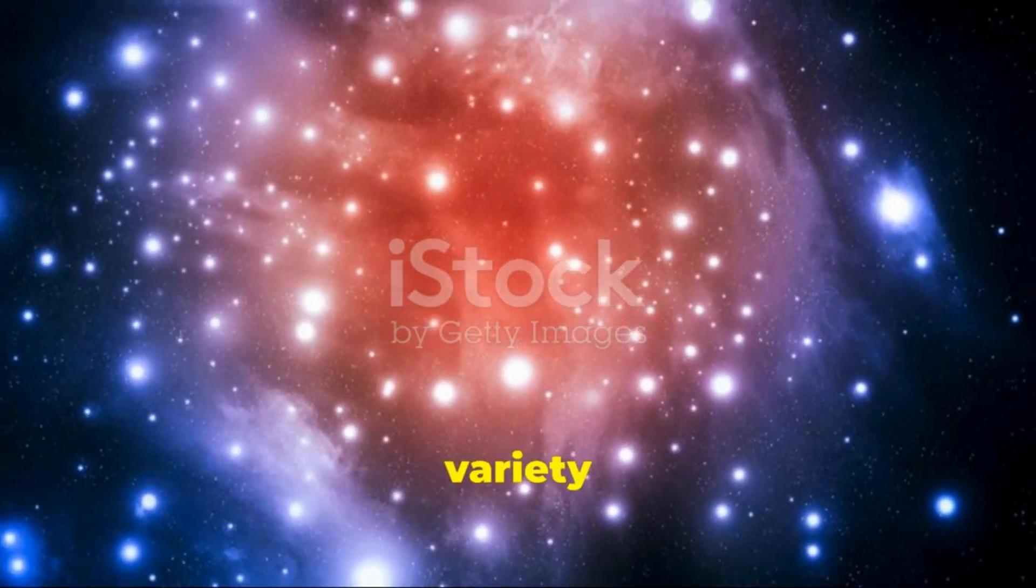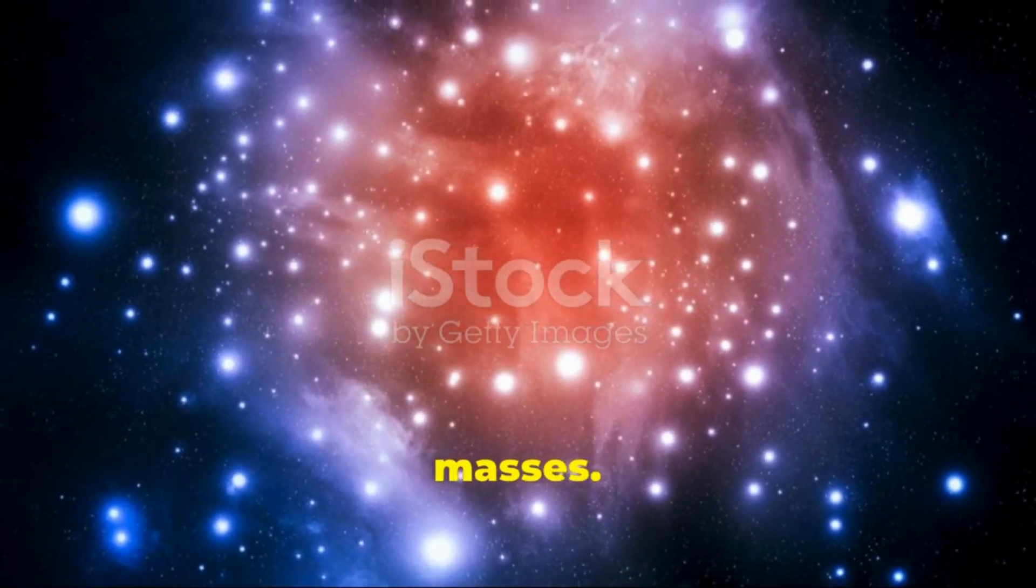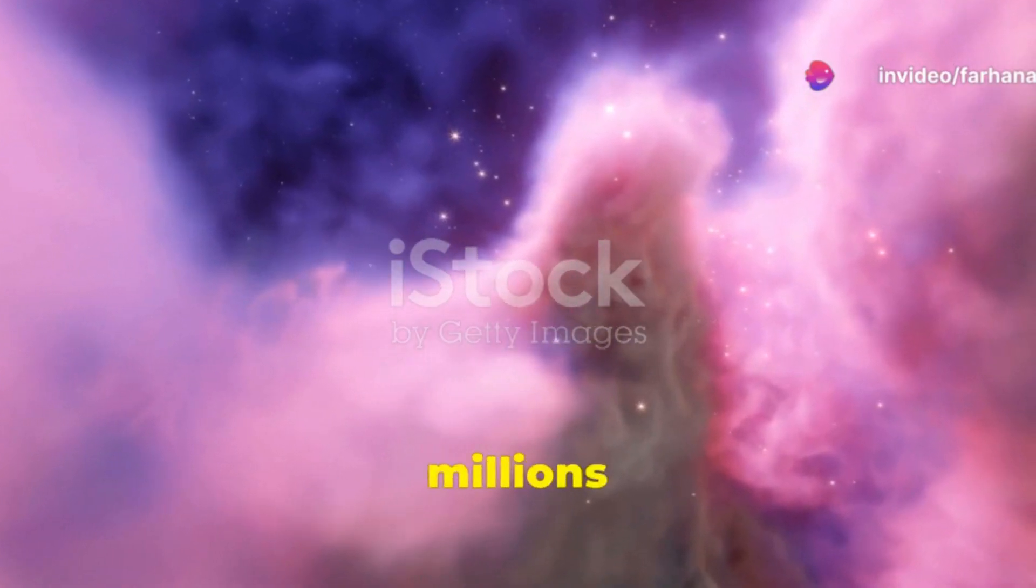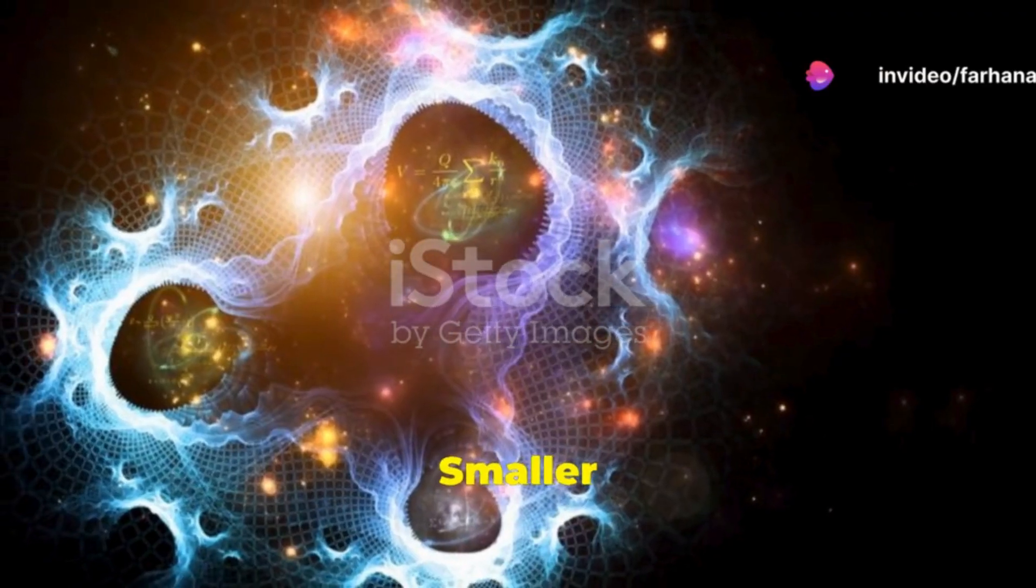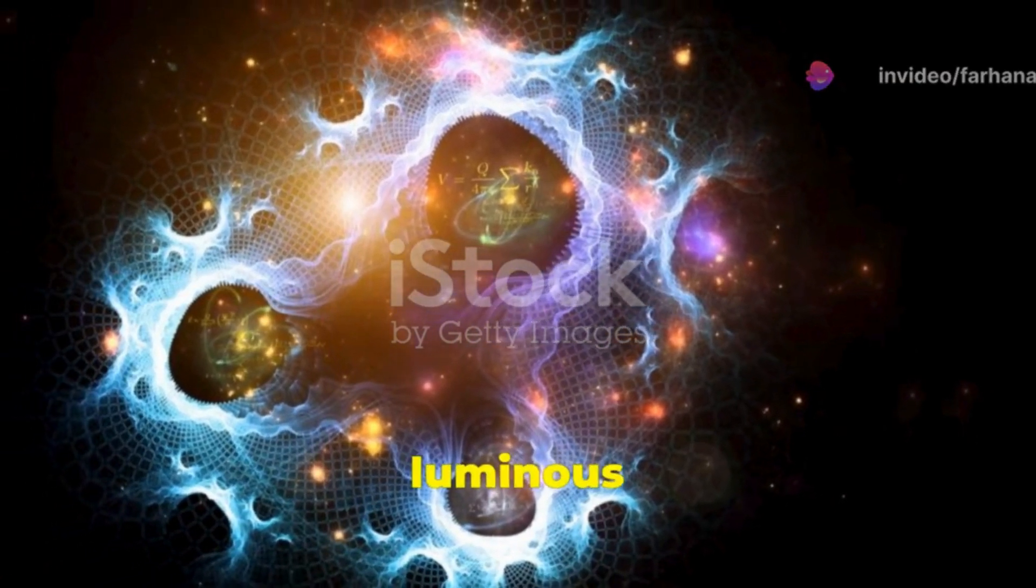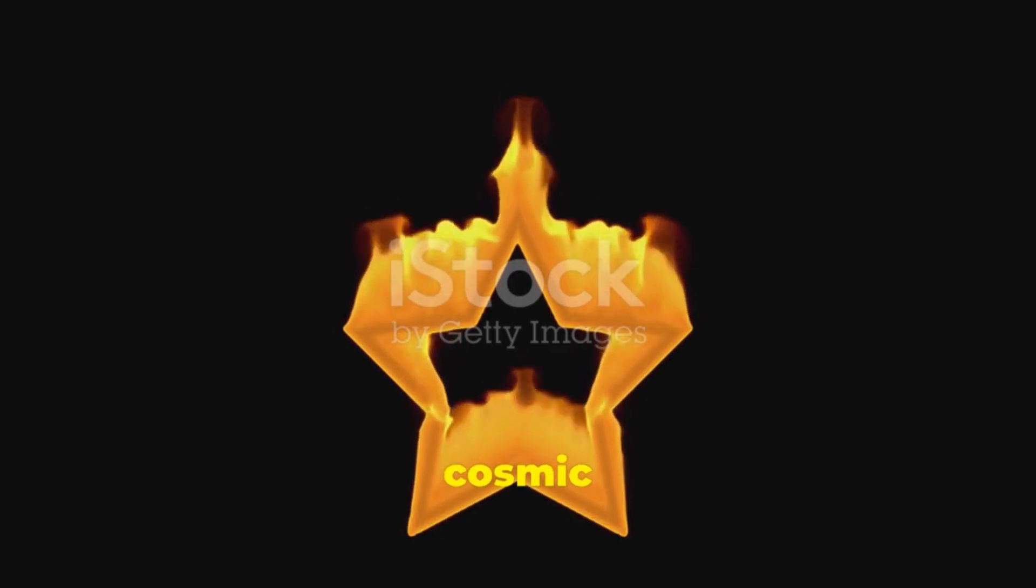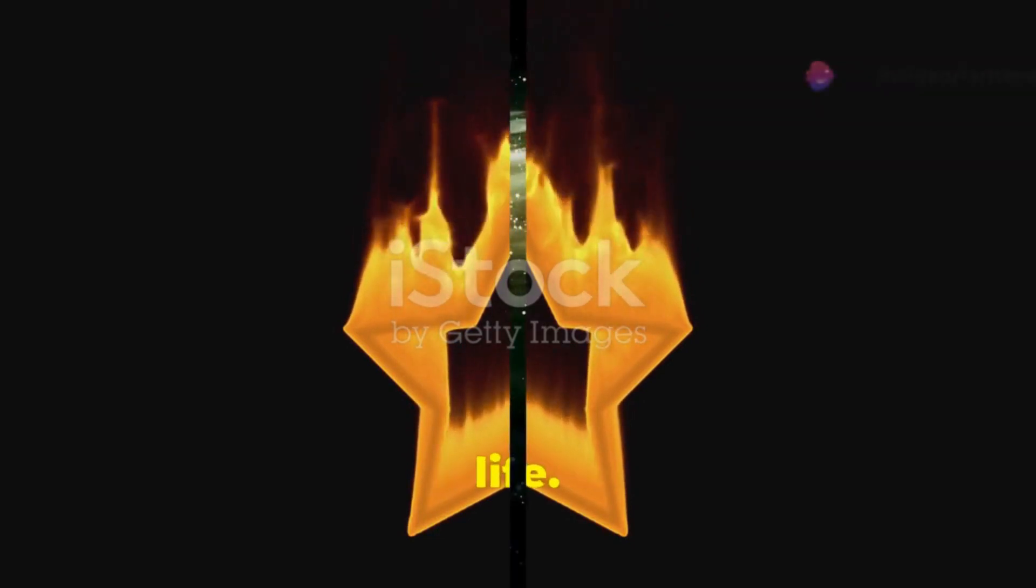Stars come in a variety of sizes and masses. The most massive stars are incredibly bright and hot. They live for millions of years. Smaller stars, like our sun, are less luminous and live for billions of years. Stars are the cosmic engines that create the elements essential for life.